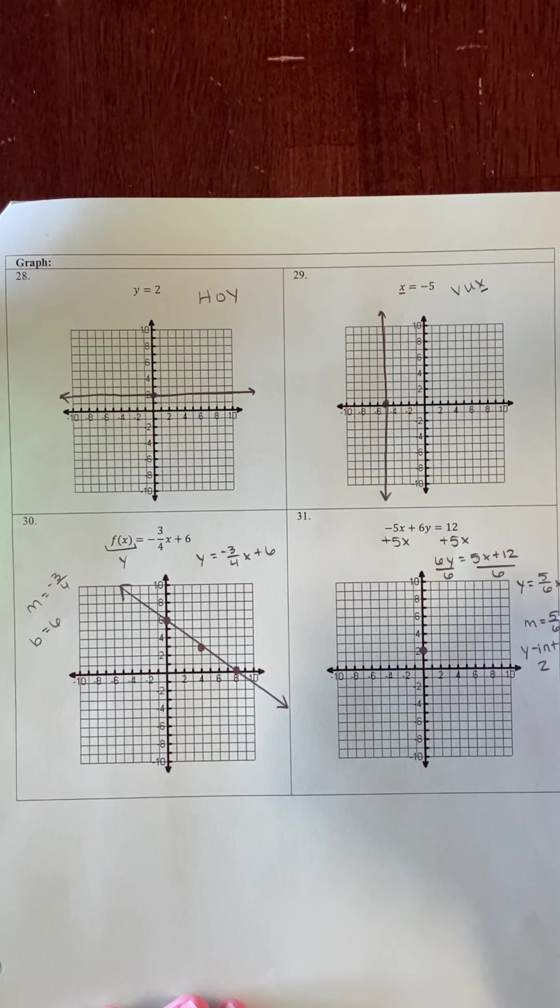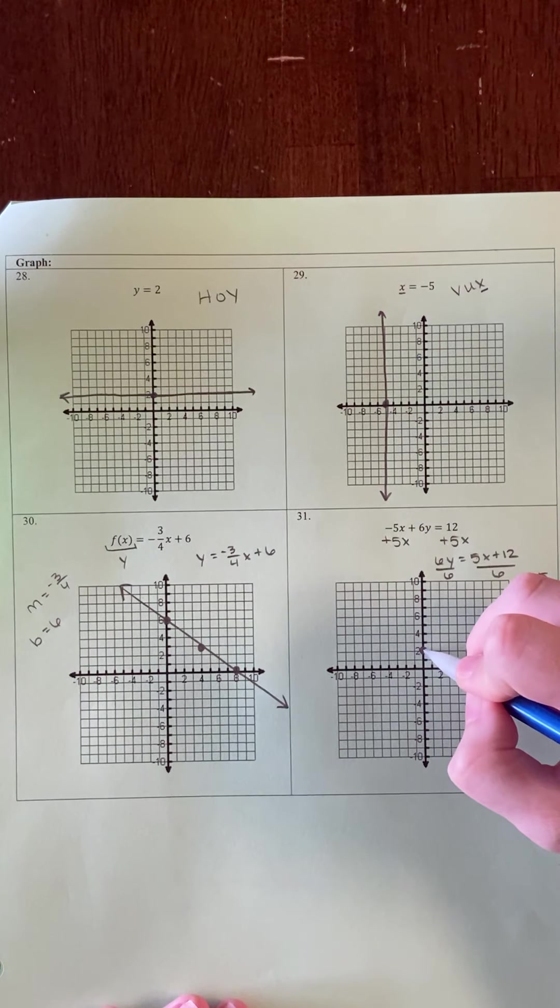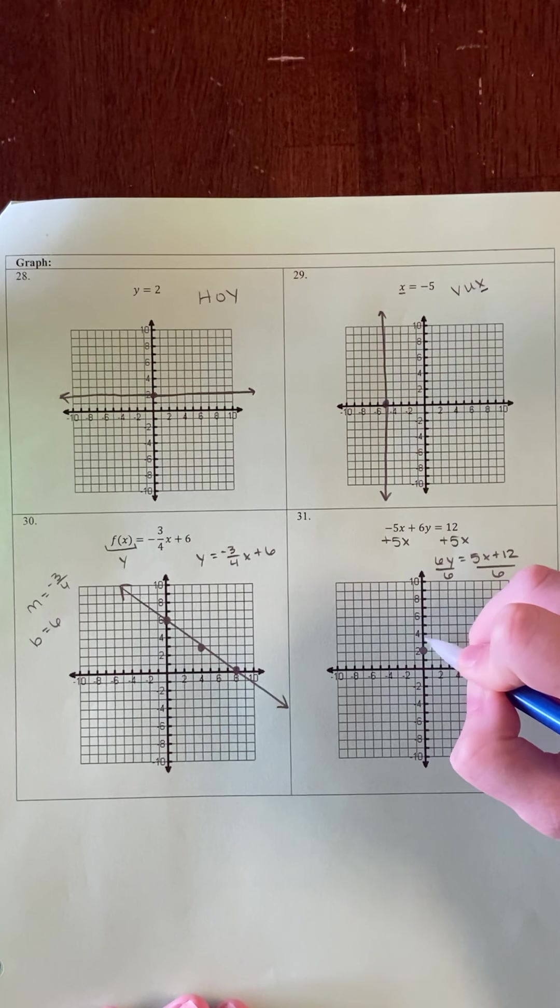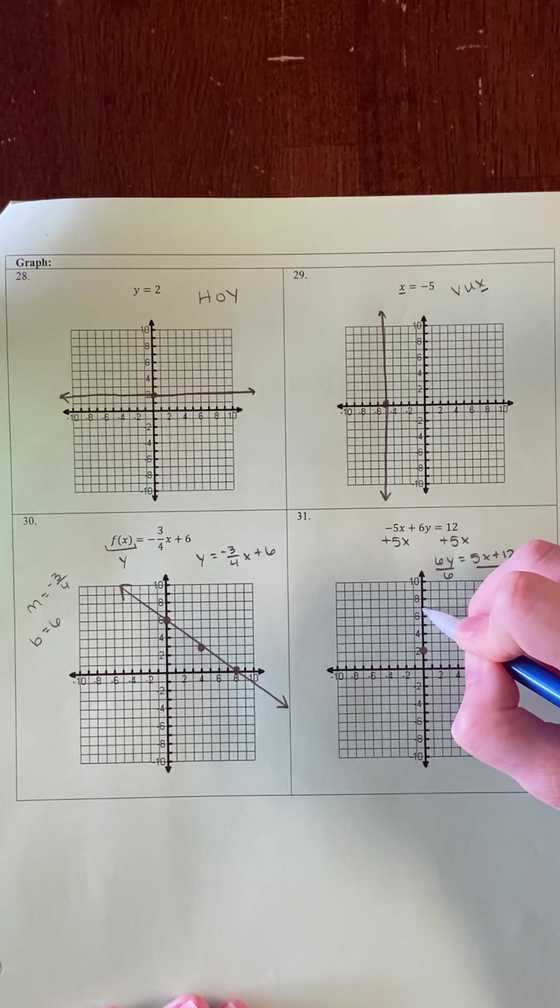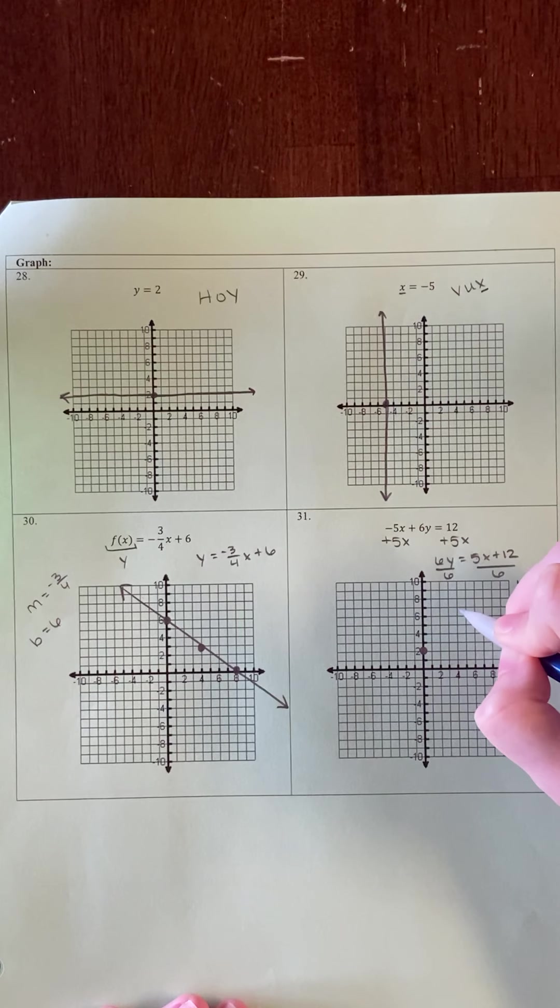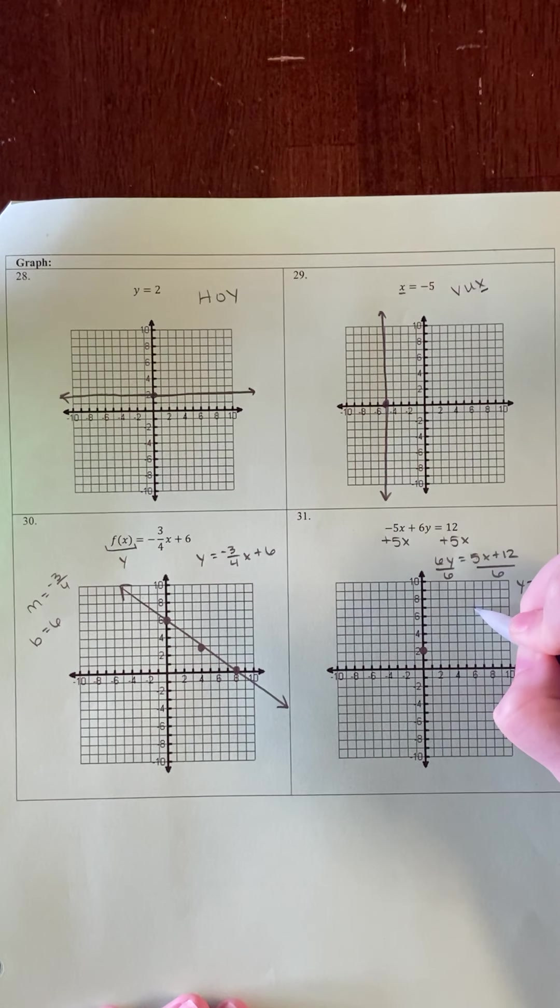My slope of 5/6 means up 5, right 6. So starting from this y-intercept, I'm going to go up 5 (1, 2, 3, 4, 5) and then over 6, and plot a point.